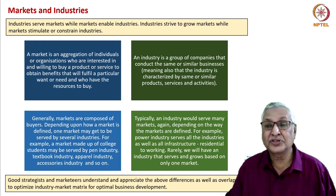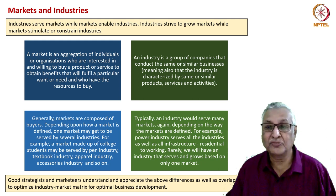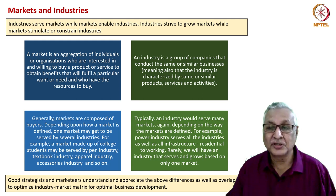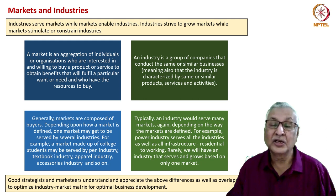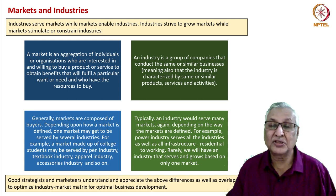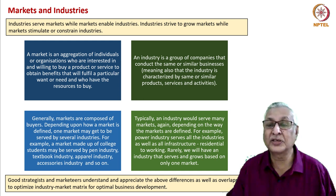To compare and contrast: an industry is a group of companies that conduct the same or similar businesses, characterized by the same or similar products, services, and activities. That is how we have the renewable energy industry, the apparel industry, the paint industry, and the cement industry as examples. Companies manufacturing the same or similar products are grouped together as an industry.